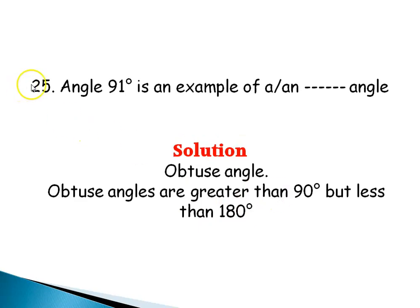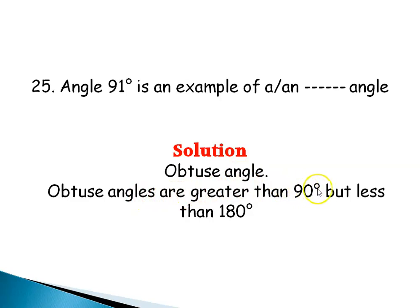Question 25: Angle 91 degrees is an example of what type of angle? This is an example of an obtuse angle, because obtuse angles are greater than 90 degrees but less than 180 degrees.